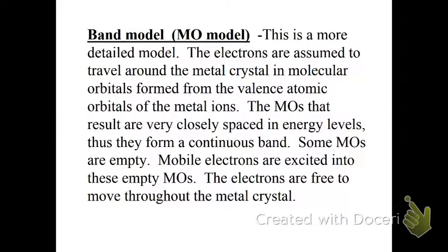Then we have something a little bit more complicated, and that is called the band model or the molecular orbital model. This is more detailed. The electrons are assumed to travel around the metal crystal in molecular orbitals, which are formed by the valence atomic orbitals of the metal. These molecular orbitals that result are very closely spaced energy levels, and they form like a continuous band. Some of the molecular orbitals are empty, and then mobile electrons get excited, and they go into those empty orbitals, and they're free to move throughout the metal crystal.